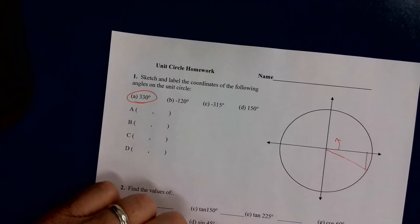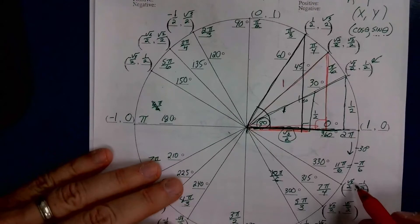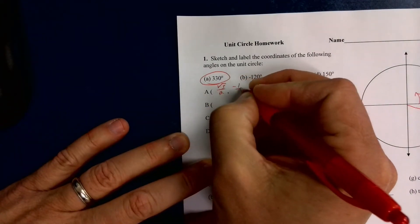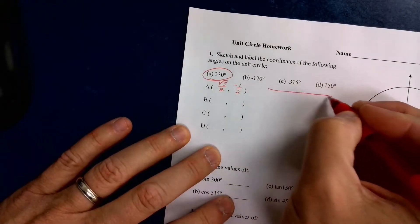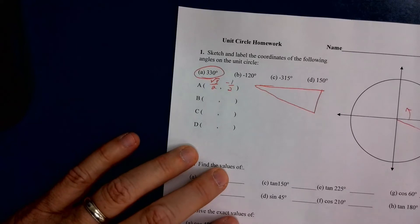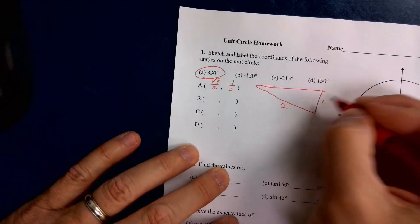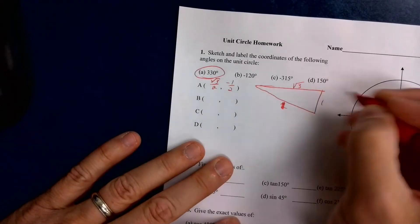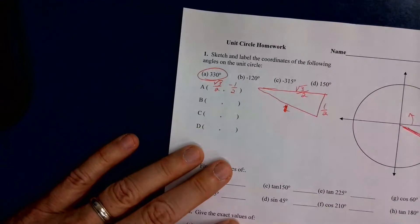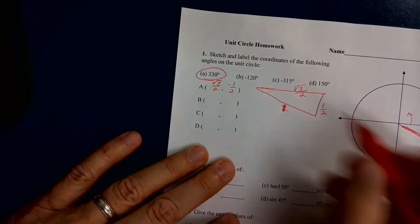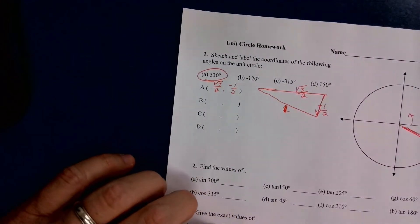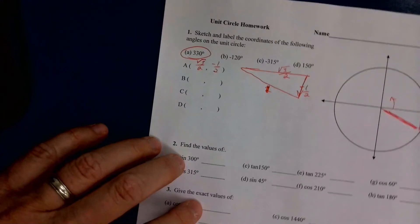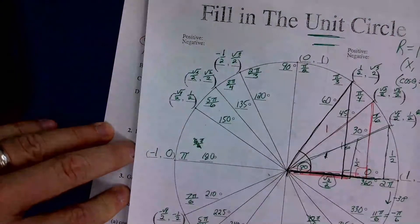If you take a look at your unit circle, 330 degrees gives me square root of 3 over 2 and negative 1 half. That comes from a 30-60-90 triangle with ratios of 2 to 1 to square root of 3. On a unit circle where the hypotenuse is 1, everything gets cut in half: this becomes 1 half, and this becomes root 3 over 2. Because it goes down, the x value is root 3 over 2 and the y value is negative 1 half. We can use this to get the values of the others.